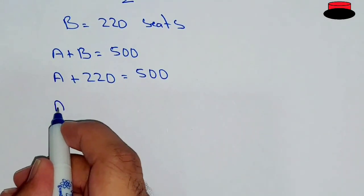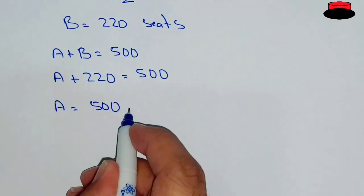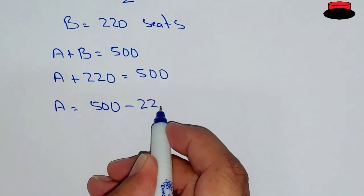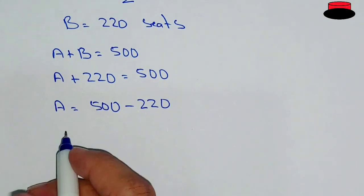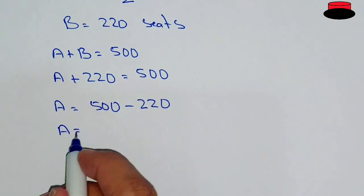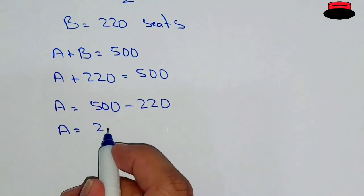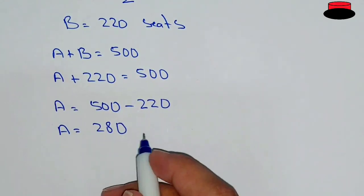Therefore, A will be equal to 500 minus 220. So the total number of seats in Plane A will be 280.